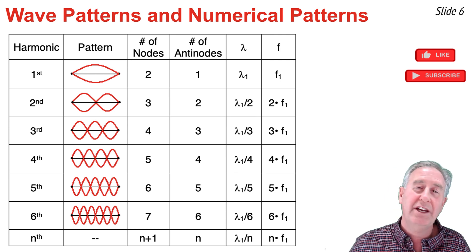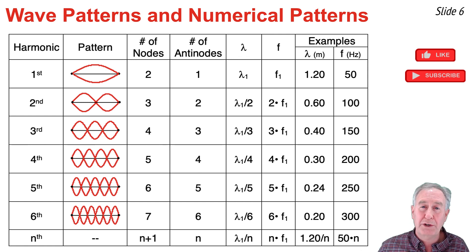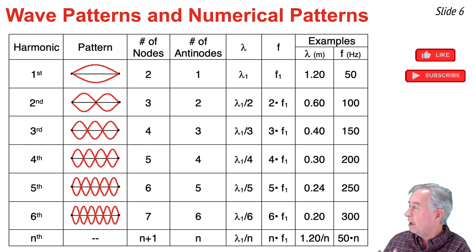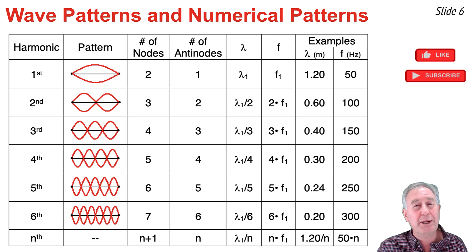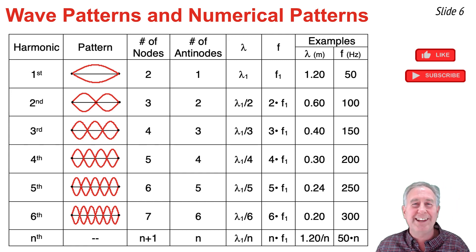In general, the frequency of any harmonic is simply the harmonic number multiplied by the frequency of the first harmonic. To put numbers with these patterns: if the first harmonic's wavelength is 1.20 m, the wavelengths of the second through sixth harmonics are found by dividing 1.20 by the integers 2, 3, 4, 5, and 6. And if the frequency of the first harmonic is 50 Hz, the frequencies of the second through sixth harmonics are calculated by multiplying 50 Hz by the integers 2, 3, 4, 5, and 6.